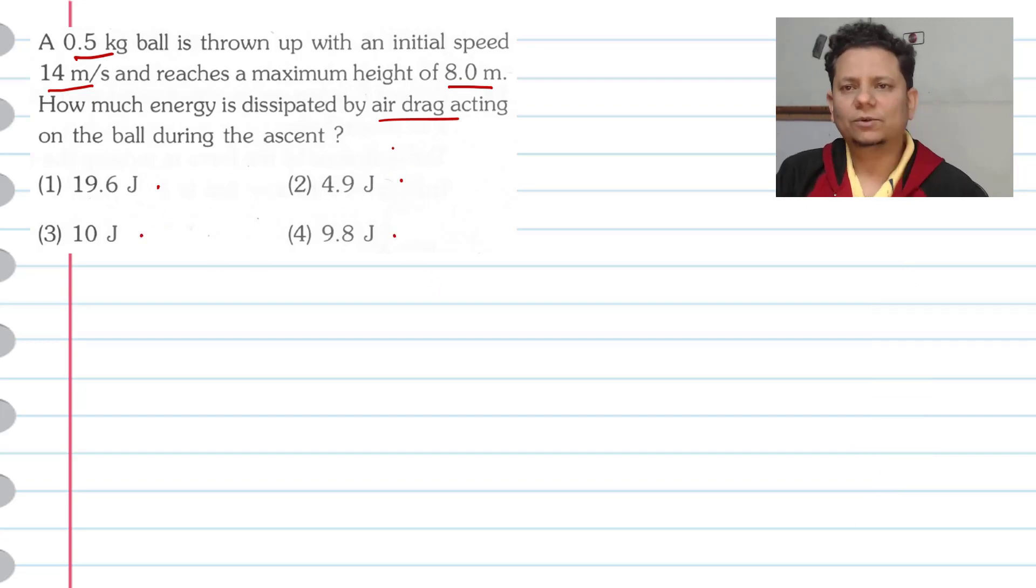Now looking at these four options, though not explicitly given here, we should take G value as 9.8 meter per second square, because the options are 4.9, 9.8, 19.6. So this is the value of G that we will take. Now you know this.